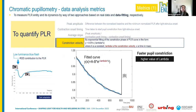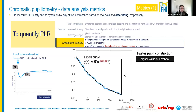Alternatively, we can use a data fitting approach consisting of an exponential fit of the constriction phase of the pupil response curve. We compute parameter estimates like lambda, which is indicative of pupil constriction velocity in the same way as the average slope.